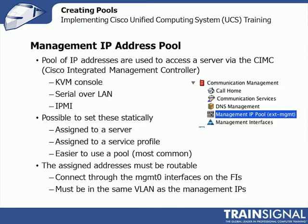The first pool is a Management IP Address Pool. It's a pool of IP addresses used to access a server via the CIMC — Cisco Integrated Management Controller. Think of it as onboard lights-out management functionality. It's used for KVM access, serial over LAN, and IPMI management. There are a couple of ways to do these: you can set them statically assigned to a server or a blade, assigned to a service profile, or using a pool — which is the most common method.